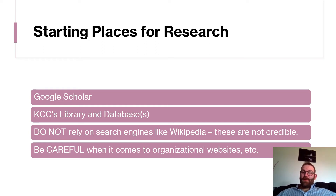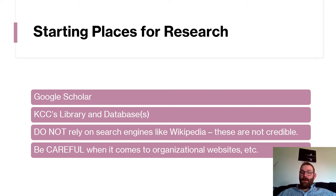Be careful when using organizational websites — most organizations have very biased opinions, so use those at a very minimum. Your primary places are going to be databases like Google Scholar and KCC's Library and Database. Get in touch with a librarian and have them assist you with doing research for your topic.